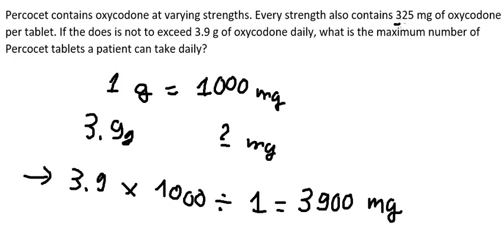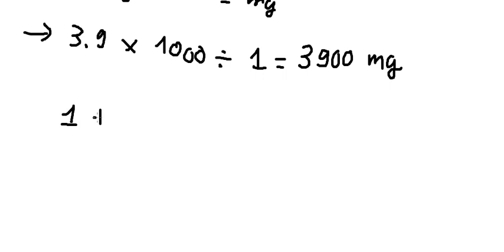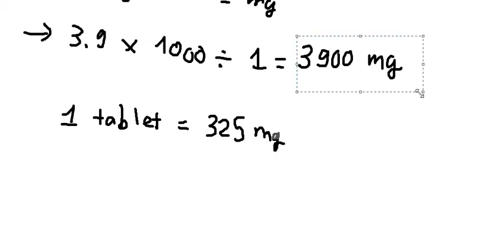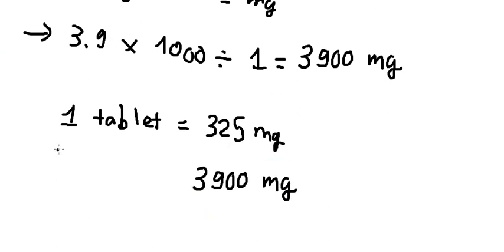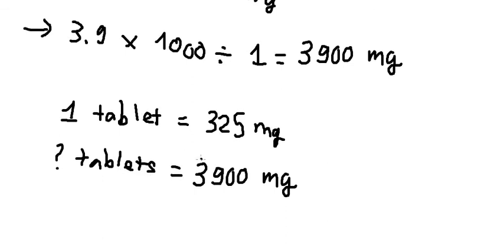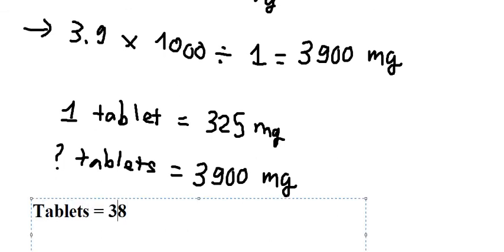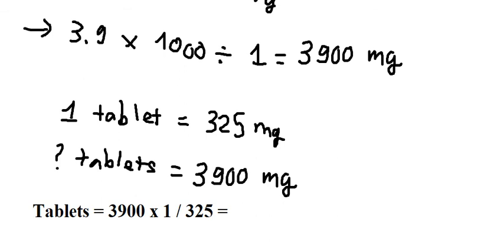We know that one tablet contains 325 milligrams. So we have the maximum of 3900 milligrams, and we want to find how many tablets. We multiply by one and divide by 325, giving us the final answer of 12 tablets.